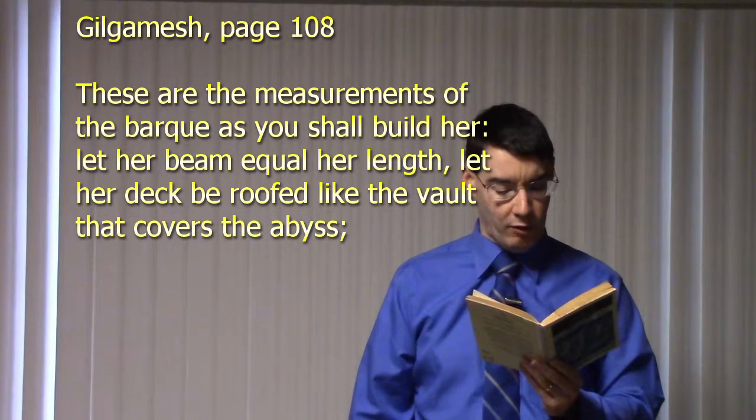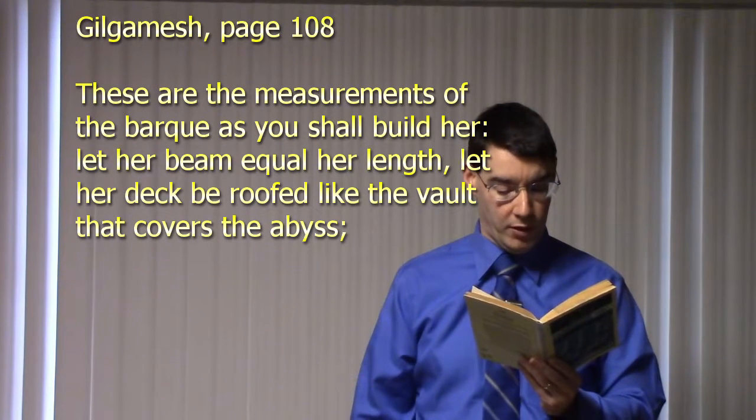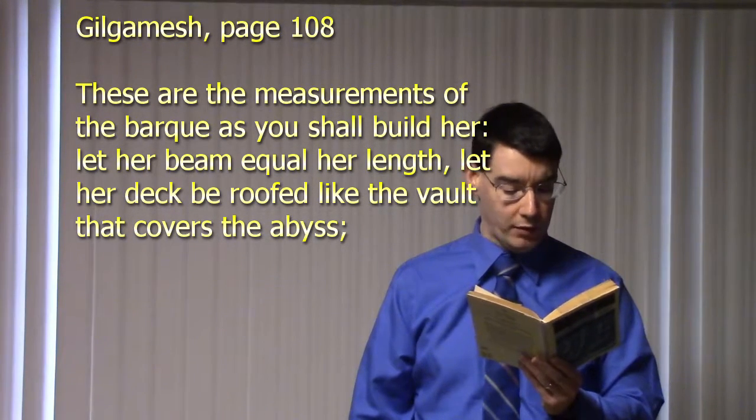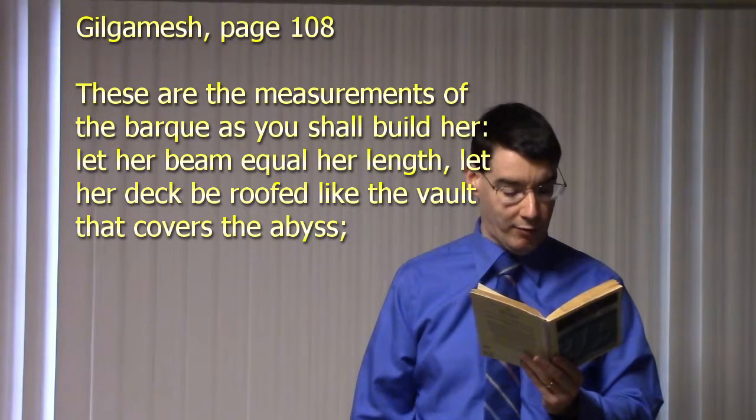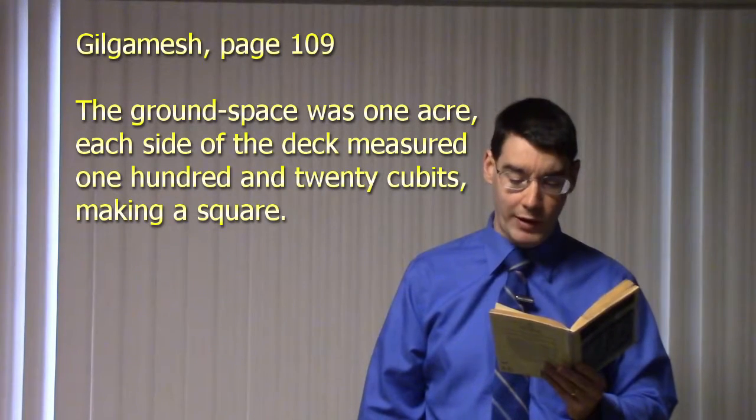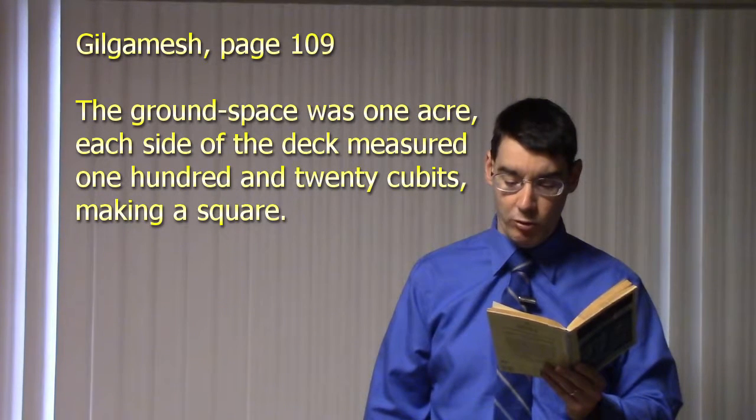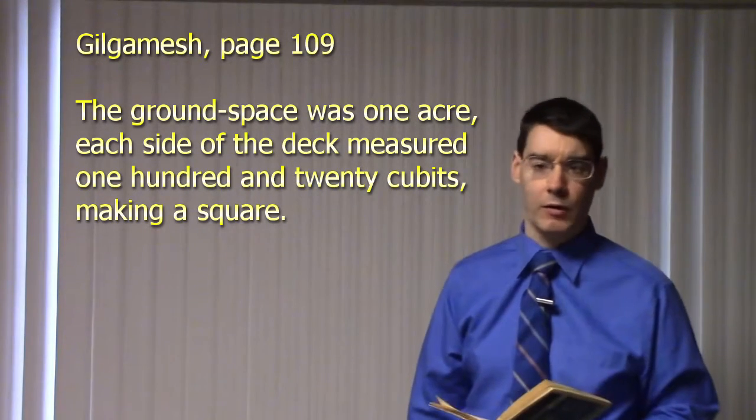But what about the shape or the length of the two vessels? Ea goes on and speaks to Utnapishtian about the dimensions: 'These are the measurements of the bark as you shall build her. Let her beam equal her length. Let her deck be roofed like the vault that covers the abyss.' On page 109 we see further details. The ground space was one acre. One side of the deck measured 120 cubits, making a square. So Utnapishtian's vessel was in the shape of a square.